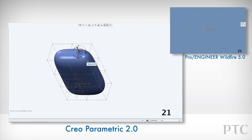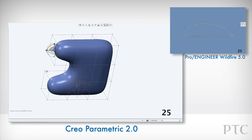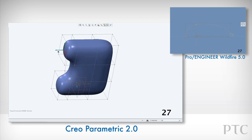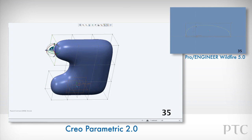We can also extrude using the middle mouse button to copy the last command. The draggers used in Freestyle are consistent throughout the product, and using shortcuts such as holding the alt key, we can also extrude faces easily. Using the control key, we can select multiple areas on the control mesh and apply commands. Using the draggers, we can move or rotate the mesh as well.